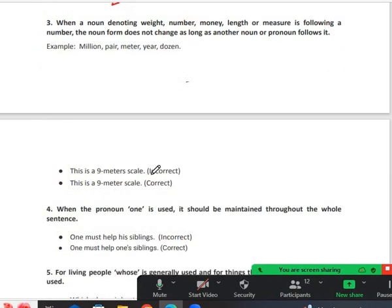Moving to the third rule: when a noun denoting weight, number, money, length, or measure is following a number, the noun form doesn't change as long as another noun or pronoun follows it. For example, meters. This is a 9 meter scale is the correct form of sentence, not 9 meters scale. Is it clear? Yes sir.